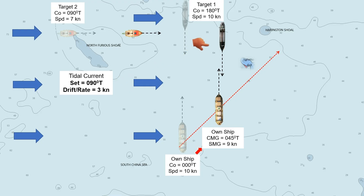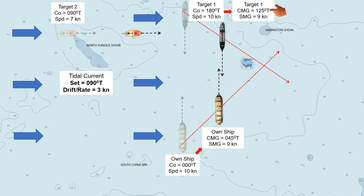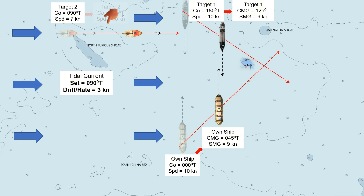For Target 1, the approximate course made good is 125 degrees true and the speed made good is 9 knots, the same as our ship. For Target 2, the current has no effect on the boat's present course — it is still 090 degrees true. Due to favorable current, the boat is now making a speed of 10 knots.